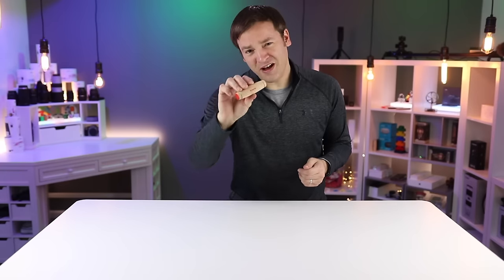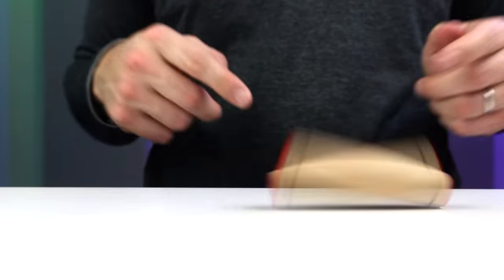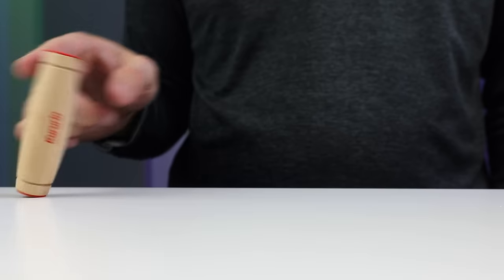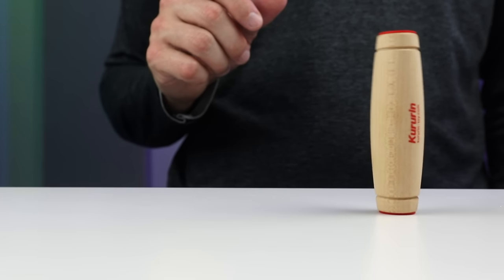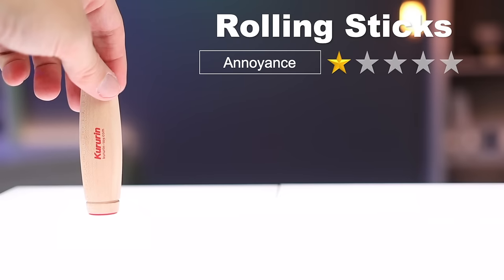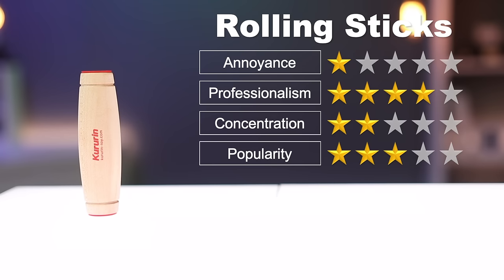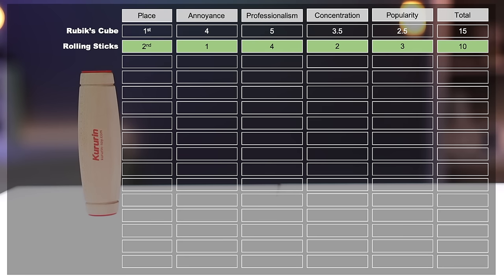Next up is the Kirin also known as rolling sticks and the thing is a ton of fun and a fan favorite. But let's be honest, it sounds like you're dropping a block of wood on your desk over and over and over again. Because of that it gets a one for annoyance, four for professionalism - it actually looks fine sitting on your desk. Two and a half stars for concentration and three and a half for popularity, landing it in second place for now.